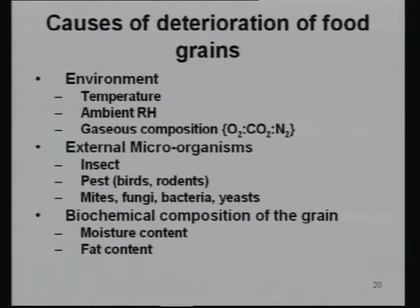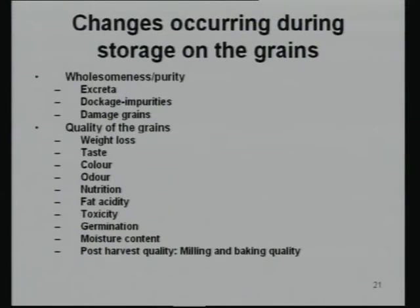Deterioration in food grains from the environment is caused by temperature, relative humidity, and storage gas composition. Biochemical changes due to moisture and fat content can affect quality — causing weight loss, taste change, color, odor, nutritional changes, increased acidity, and moisture content. All these affect milling and baking quality.